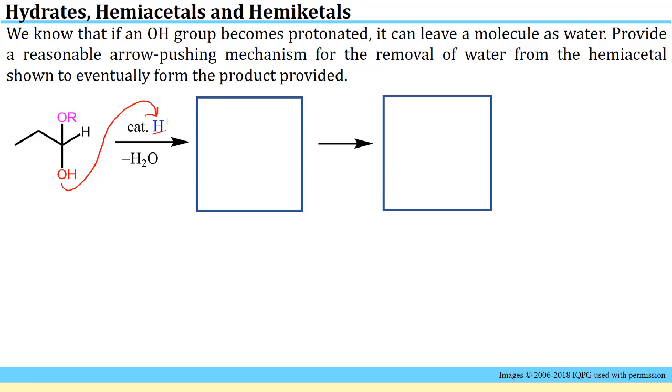We'll start by doing that, and that would give us this species. I've kept this hydrogen blue to show us that it came from the acid. Now since we were given the product, we know that we want to form a double bond here.